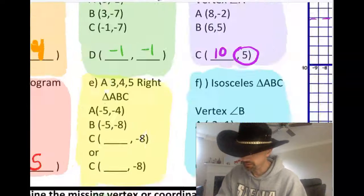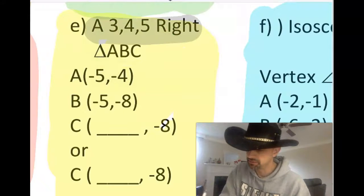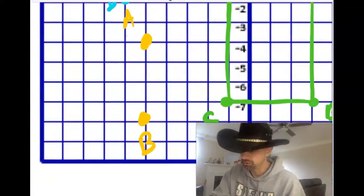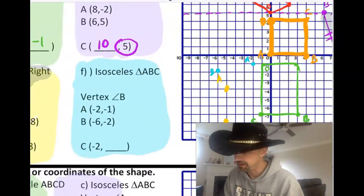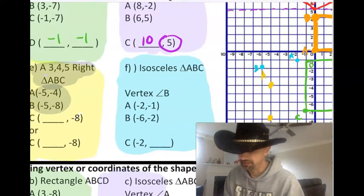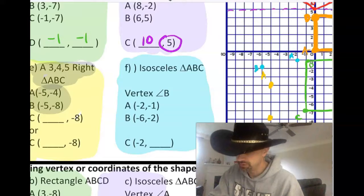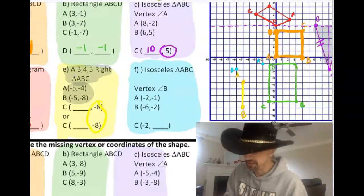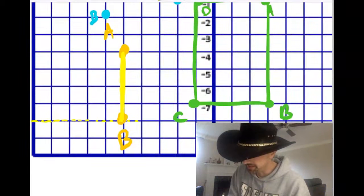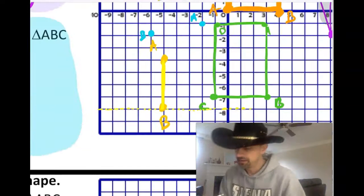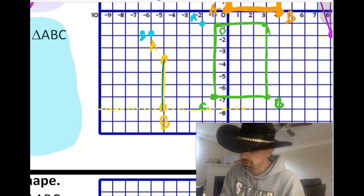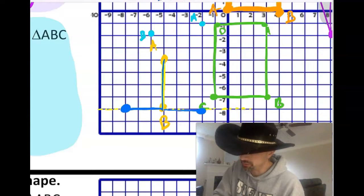And let's try the yellow one. This is a 3, 4, 5 right triangle. They gave us -5,-4, and -5,-8. So they gave us those two yellow points there. And it says there's two different 3, 4, 5 right triangles. Let's see what they're talking about here. If that's one side. And I know that they want me to be at -8 on both choices, which is on this line here.